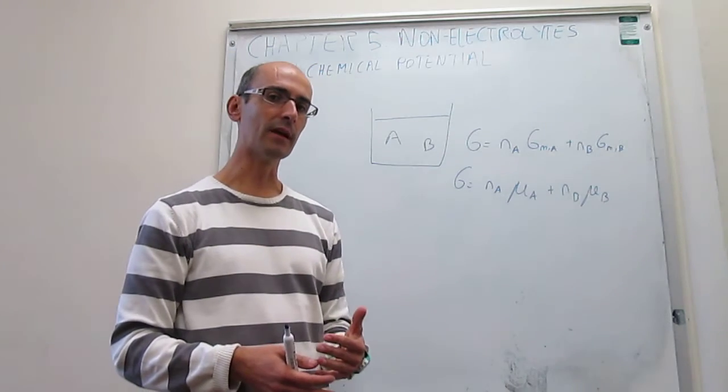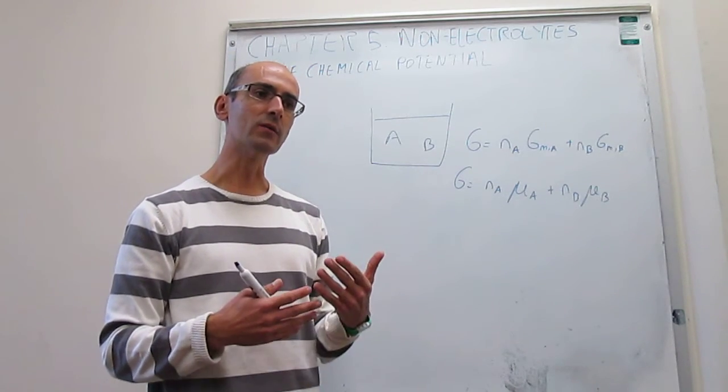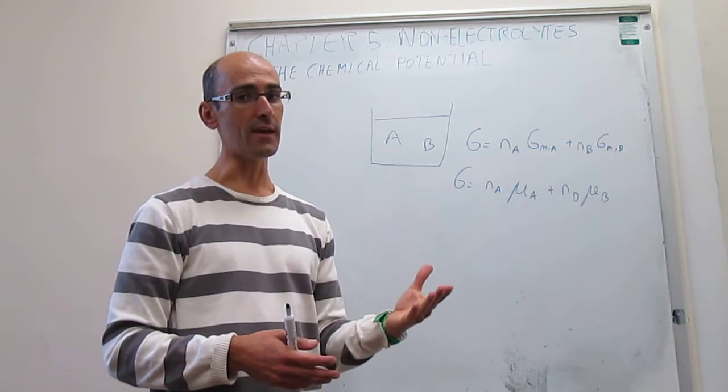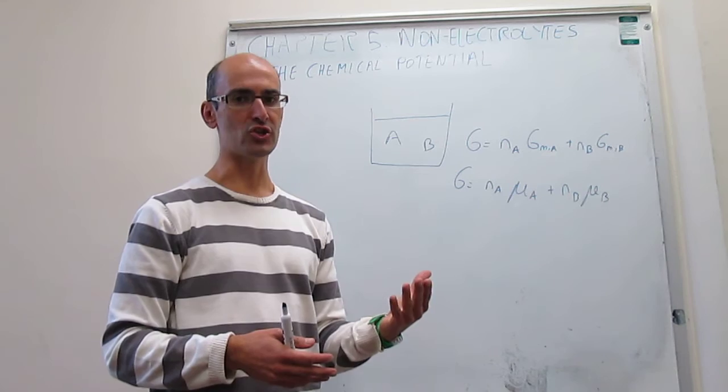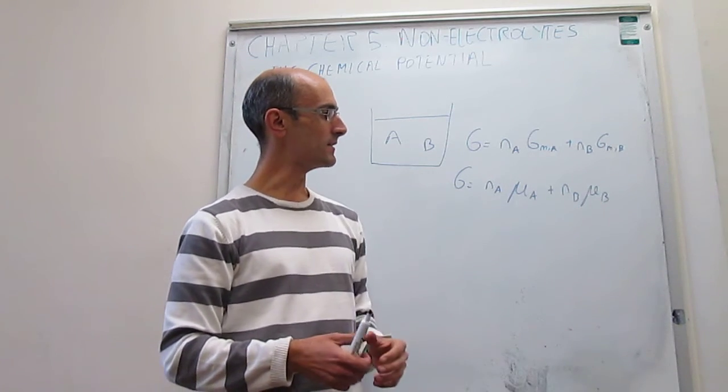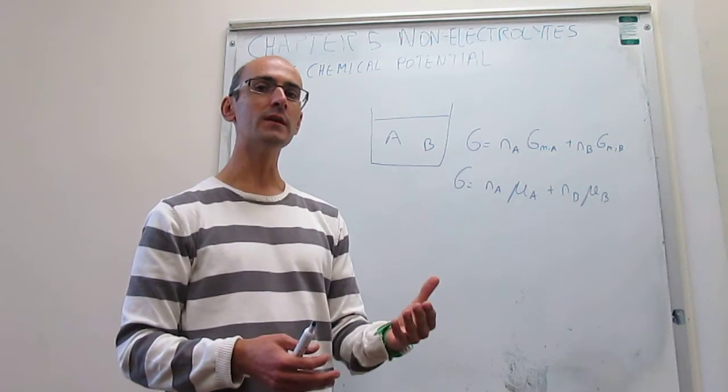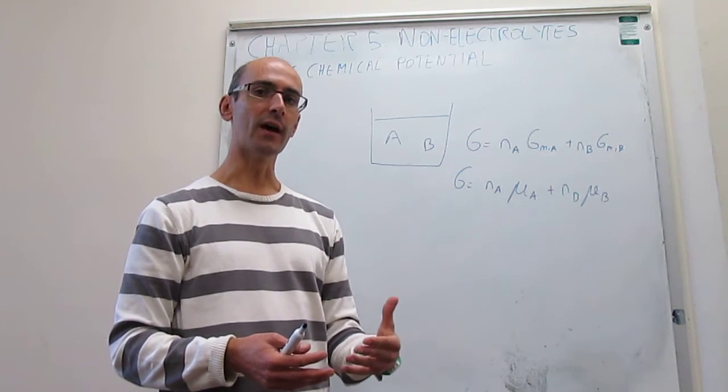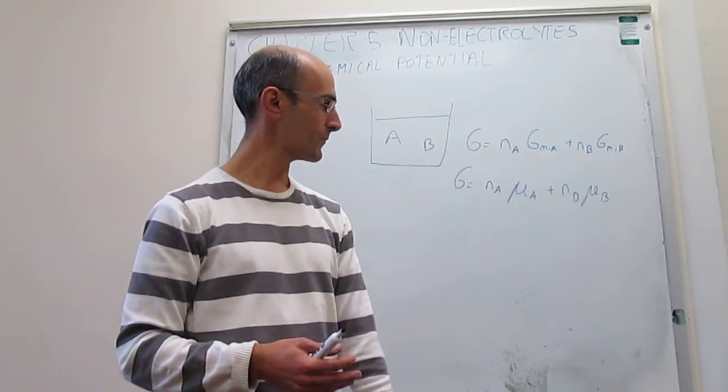So, the name is interesting, chemical potential. Essentially, this is a measure for the ability of A to elicit change, and this is a measure of the ability of B to elicit change. The higher your chemical potential, the more ability you have to make a change.